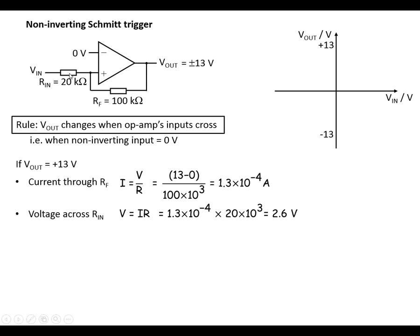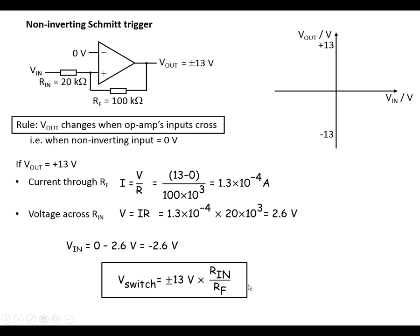We can work out how many volts we've got across the lower resistor using V = IR, and it turns out we've got 2.6 volts across it. Then we can work out V-in: we've got 0 volts at the non-inverting input and we lose 2.6 volts across R-in, so V-in equals minus 2.6 volts. More generally, the formula for the switching voltage is: output voltage (15V) divided by RF to get the current, multiplied by R-in to get the switching voltage. Looking at the graph, when V-out is positive this is the non-inverting shape. When we reduce V-in and reach the switching voltage, V-out drops rapidly to minus 13 volts and stays there until we reach the positive switching voltage.